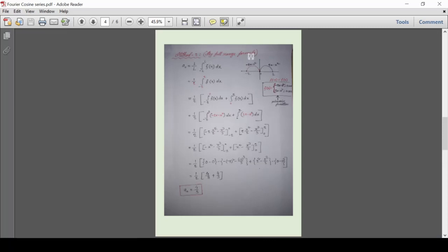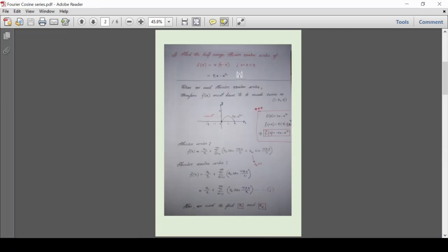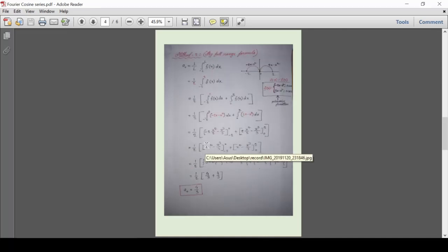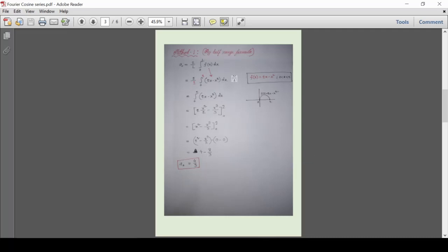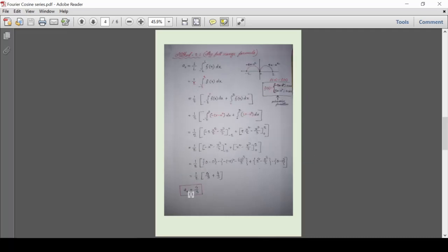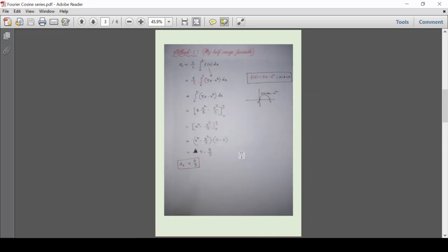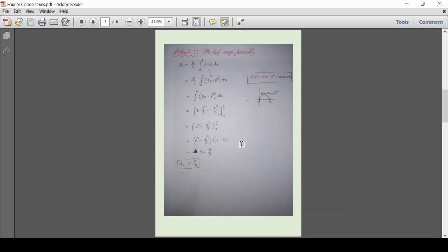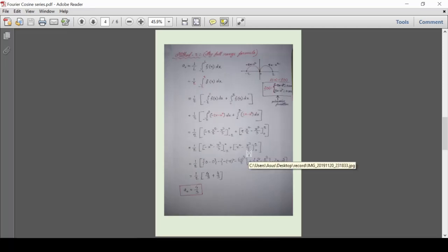You can see that we can apply any formula, maybe half-range, maybe full-range. But you can understand that if we use half-range formula, then we will get the desired result very quickly. But the main concept is both full-range and half-range will give us the same result. It doesn't matter whether we apply full-range or half-range, but it will be convenient if we apply half-range formula, because by this we will get our desired result very quickly.